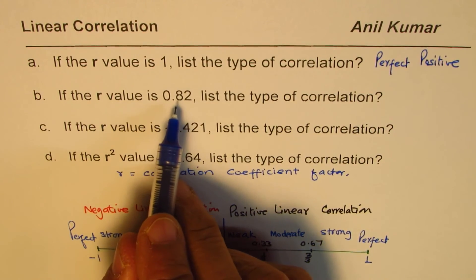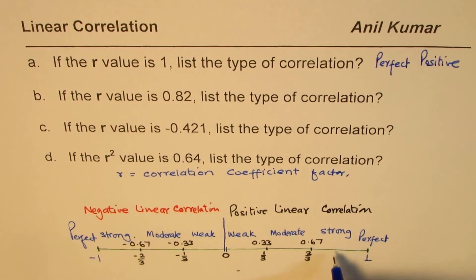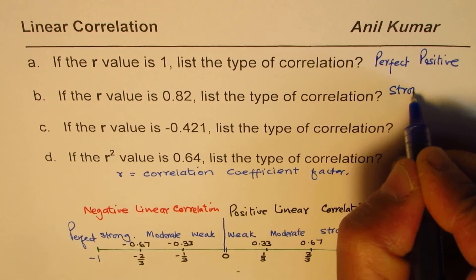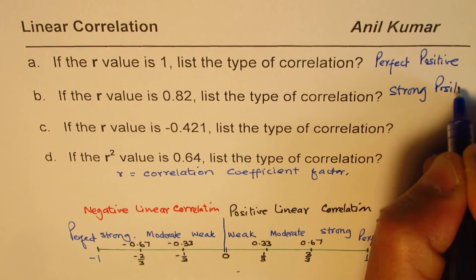If r value is 0.82, it is positive. 0.82 is between 0.67 and 1. So it will be called strong positive correlation.